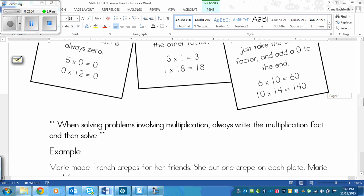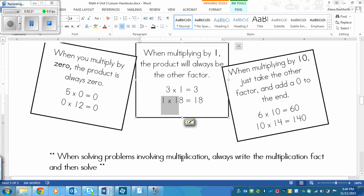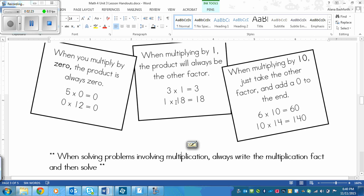Now, we have a small reminder here, because you're going to be solving problems in your assignment. And when you're solving problems involving multiplication, you always have to write the multiplication fact, and then solve it. And these are multiplication facts right here. 1 times 18, that's a fact. 10 times 14, that's another multiplication fact. 0 times 12, a multiplication fact. And then the solve would be the answer.